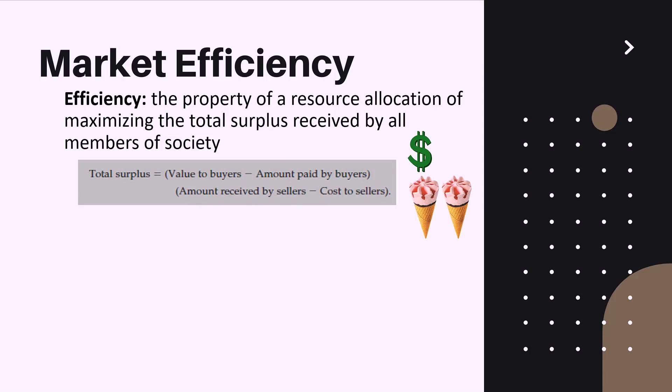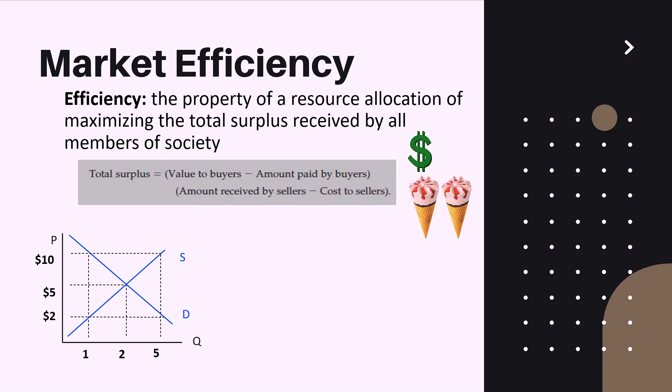Graphing supply and demand helps us better understand this concept. With supply and demand curves in equilibrium, the areas under the curves represent consumer and producer surplus. From basic math, the maximal total surplus occurs at the point of equilibrium. Since free markets in the long term converge to the equilibrium point, we can conclude that free markets in the long term increase total surplus.